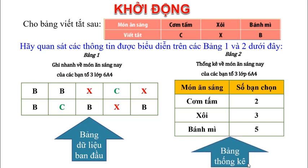Bảng 2, thông tin được biểu diễn là danh sách tên các món ăn cùng với số lượng cụ thể của từng món, được gọi là bảng thống kê. Bài học hôm nay của chúng ta chính là đi tìm hiểu 2 loại bảng: bảng dữ liệu ban đầu và bảng thống kê.